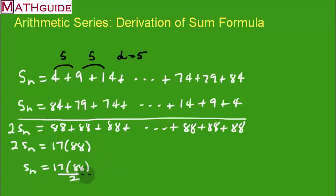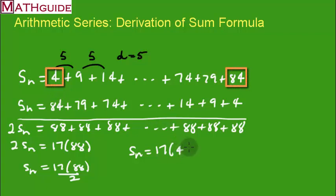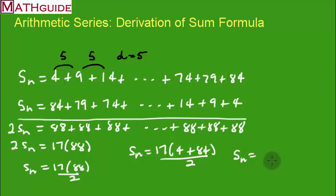This is neat — I can calculate the sum using this formula. What's even more neat is what the 88 represents. If I rewrite the sum a little differently, I notice that 88 is really the first term and the last term combined together. So intuitively — this is not a proof — it looks like if you take the number of terms (17), take the first and last terms, add them together, and divide by 2, you get the formula. In our next section I'm going to prove this is actually true.